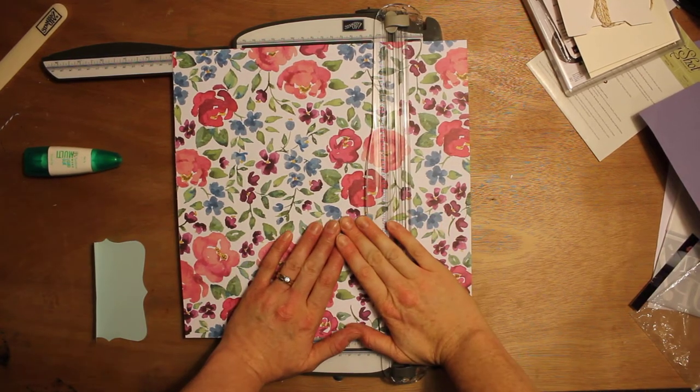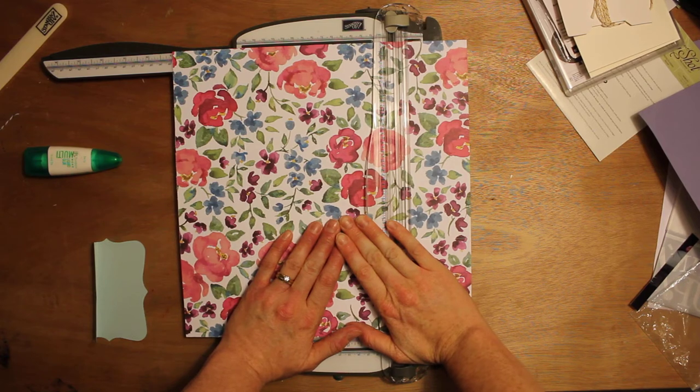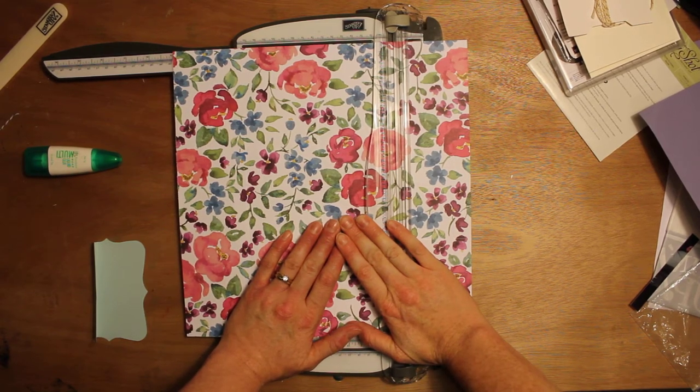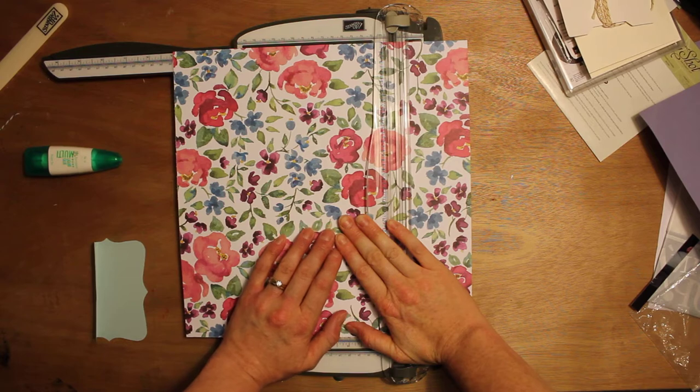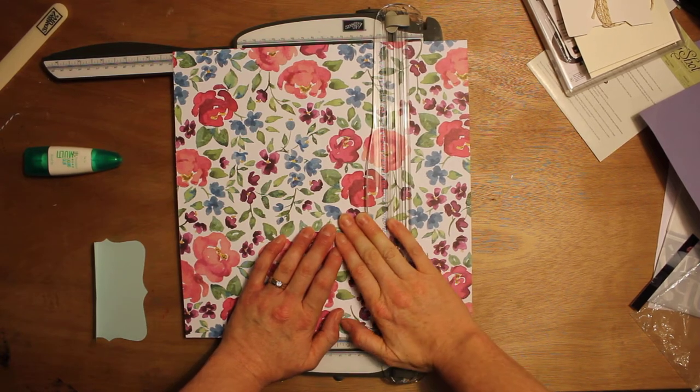So here's the lowdown on how I made my 3x4 album out of one 12x12 piece of paper. This is a beautiful sheet from the Painted Petals Designer Series paper.